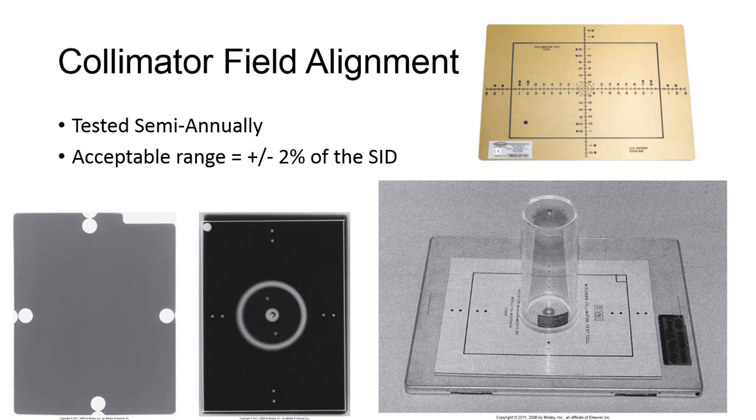If you don't have this test tool available, you can perform what's called a 9-penny collimator test, seen on the left. Using a clean image receptor, you can collimate to a square smaller than the image receptor size.